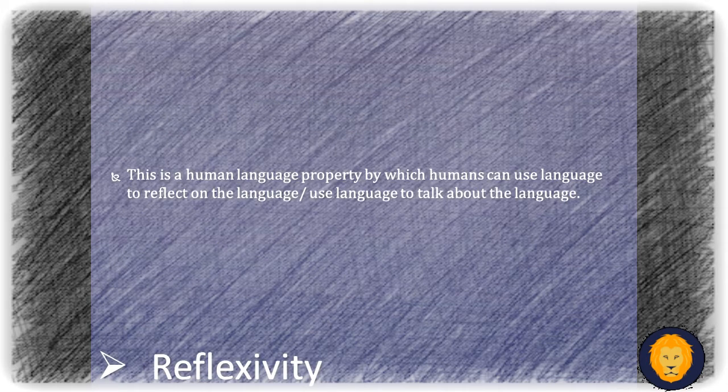First, we will deal with the reflexivity property. This is a human language property by which humans can use language to reflect on the language itself — that is, use language to talk about language. For example, in grammar classes we use English, the language, to study English itself. We use the language to study the rules of that language.